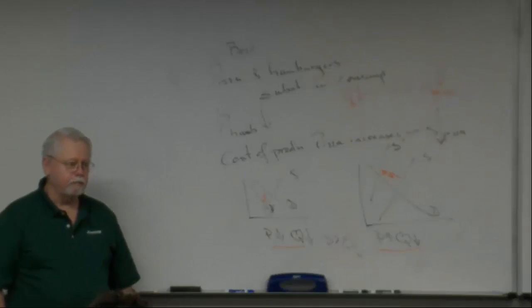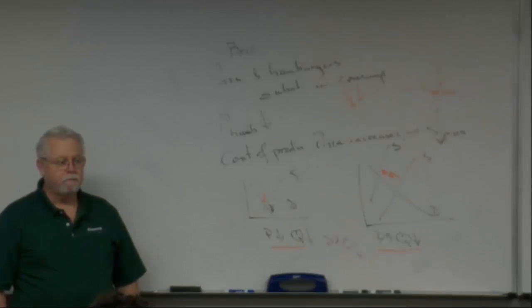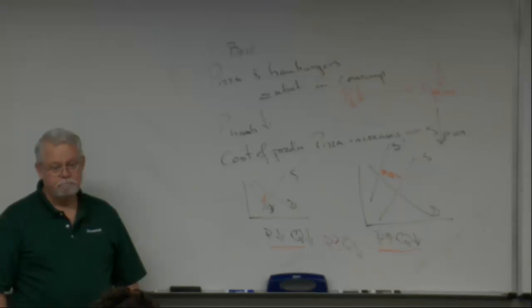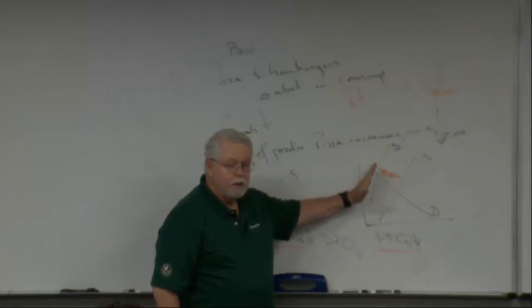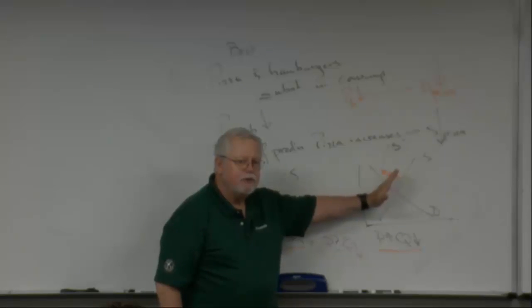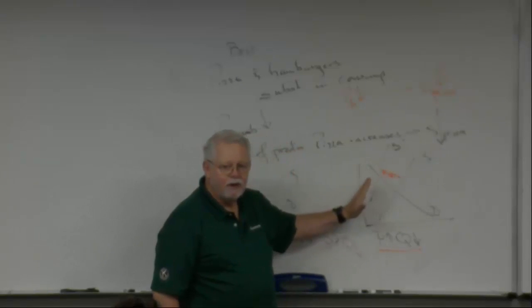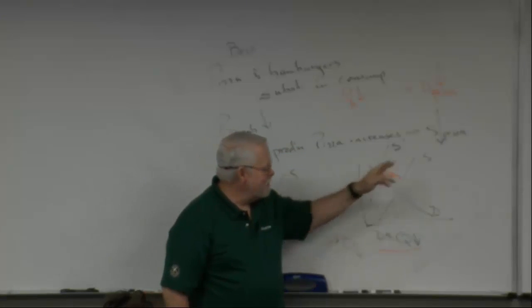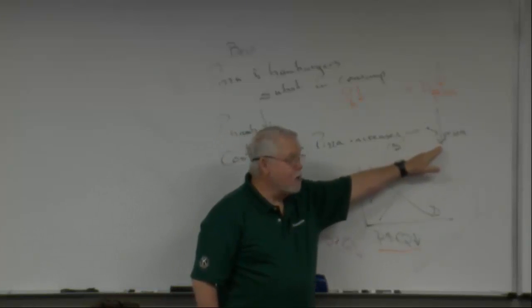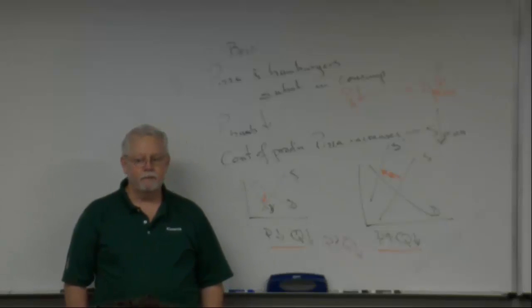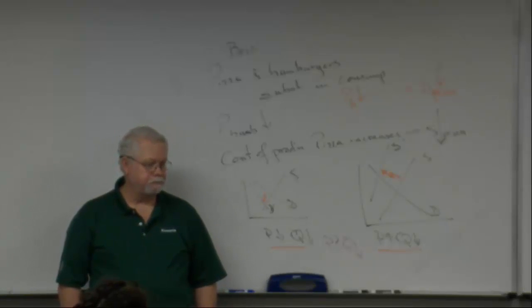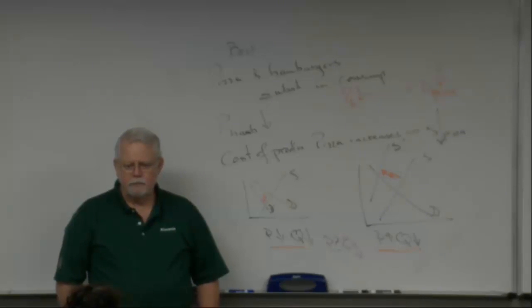Given those results, what's your answer? Price is ambiguous — you get conflicting signals — but quantity is consistently going to decrease. At this point you're probably getting close to the 'aha' moment. A decrease in supply means it shifted to the left — we don't say up or down, we say it decreased. A shift to the left is a decrease, a shift to the right is an increase.